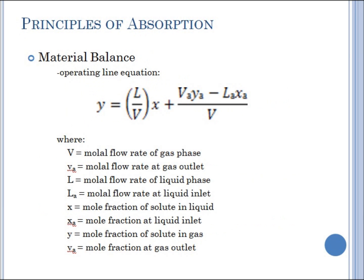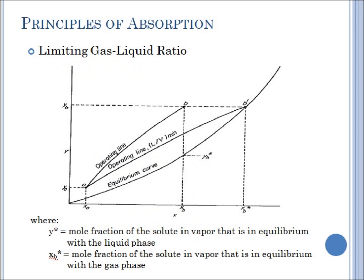The principles of absorption is discussed by the other group, but before I move on, let's have a short glimpse of these principles to refresh your memory. First in line is the material balance of the tower to derive the operating line equation. This is the operating line equation. Next is the limiting gas-liquid ratio. This ratio is just a tile line from the equilibrium line to the operating line.